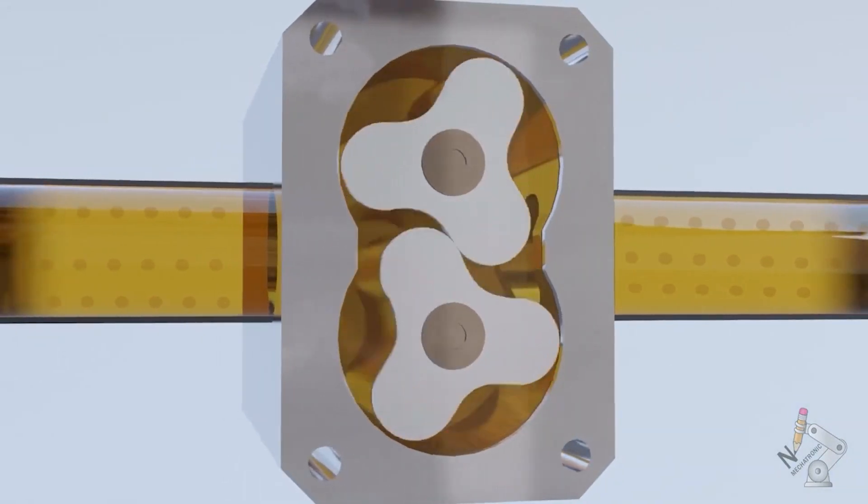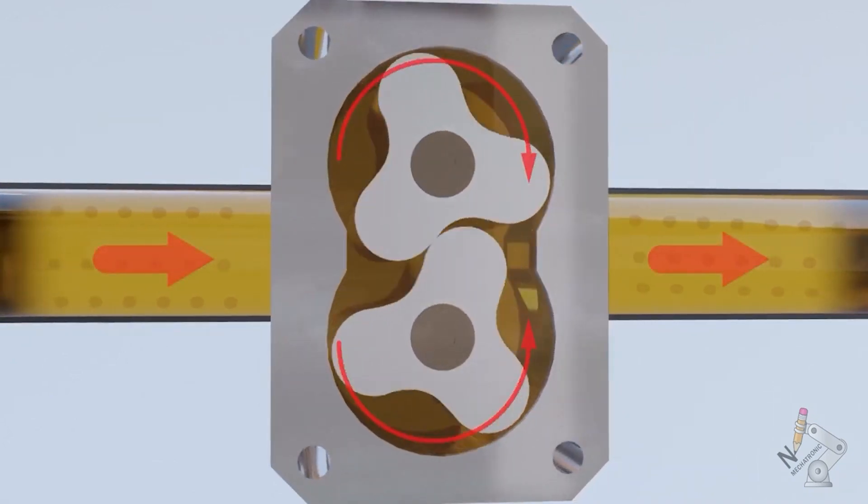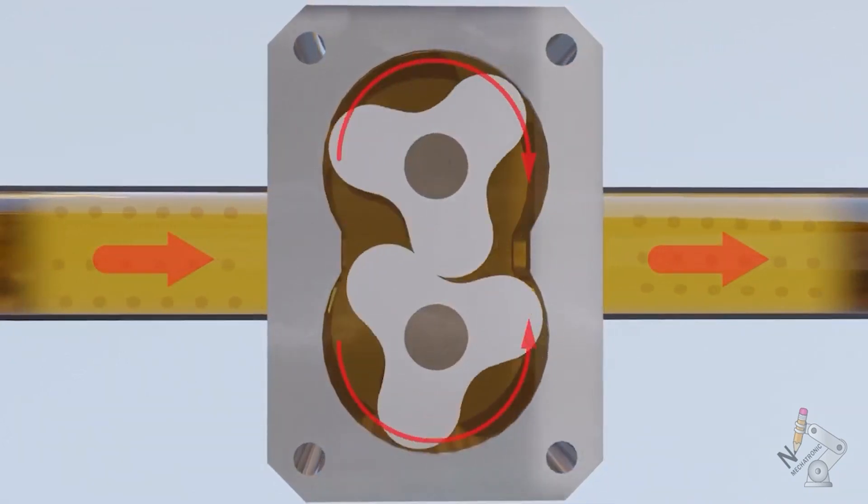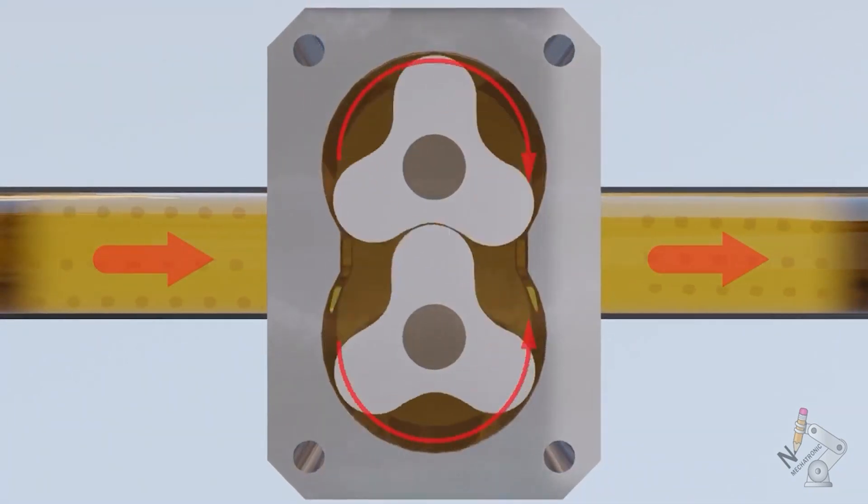The operation of this type of pump is similar to that of the external gear pump. Fluid enters and is transported to the outlet port as indicated.